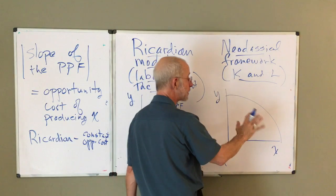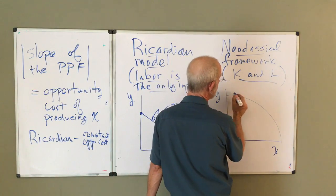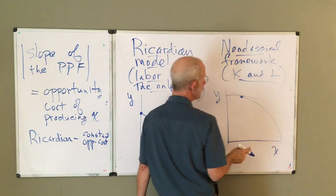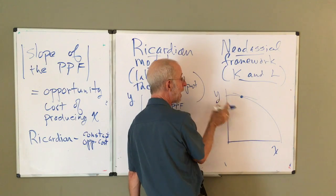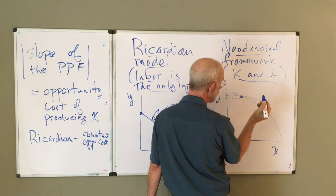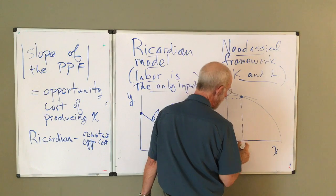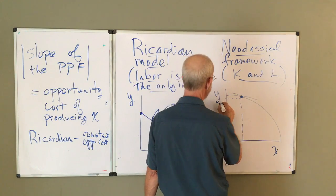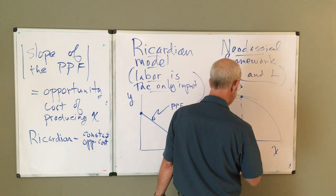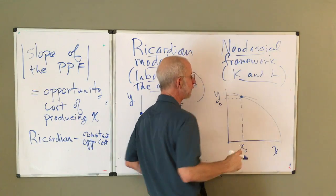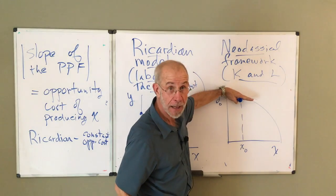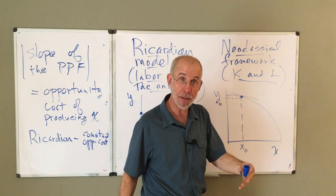In a classical framework with a bowed-out PPF, well, if I'm producing up here, mainly Y, so I've got most of my resources producing Y and only a little bit in X, the slope of that PPF is relatively flat, lower opportunity cost for X.